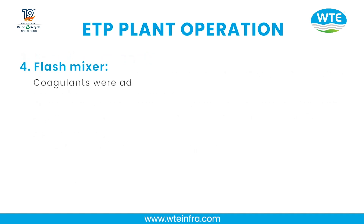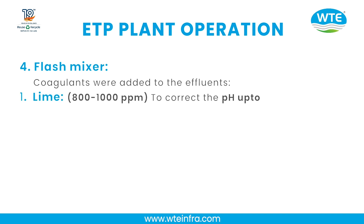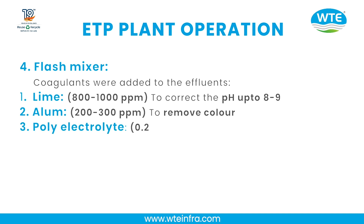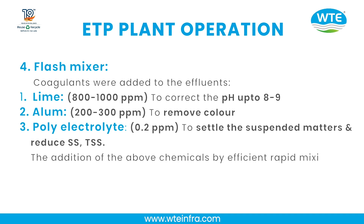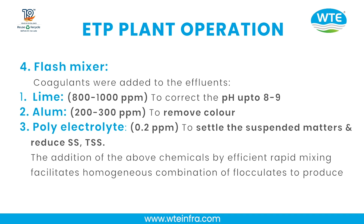Step 4 — Flash Mixer: Coagulants are added to the effluents: (1) Lime at 800–1000 ppm to correct the pH to 8–9; (2) Alum at 200–300 ppm to remove color; (3) Polyelectrolyte at 0.2 ppm to settle suspended matter and reduce TSS. The addition of these chemicals by efficient rapid mixing facilitates homogeneous combination of flocculants to produce microflocs.